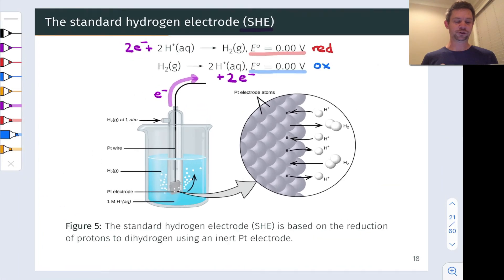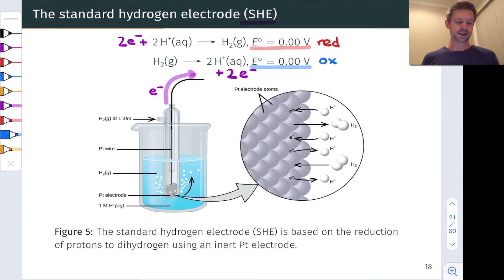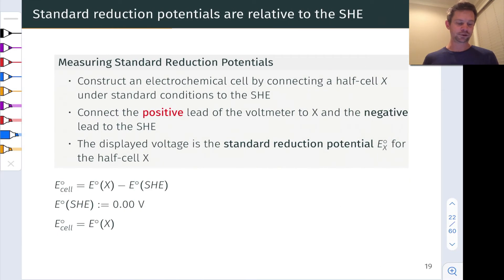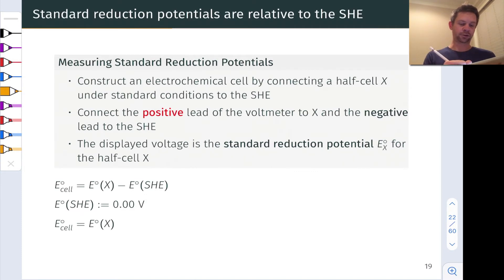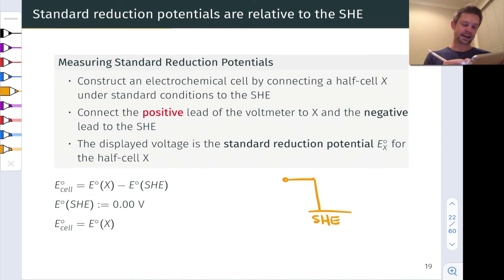One of the beauties of defining the SHE right here. So the standard hydrogen electrode is key to thinking about this process of measuring potentials conceptually. So again, we think about the SHE as our standard half cell, and I'm going to represent it like this.